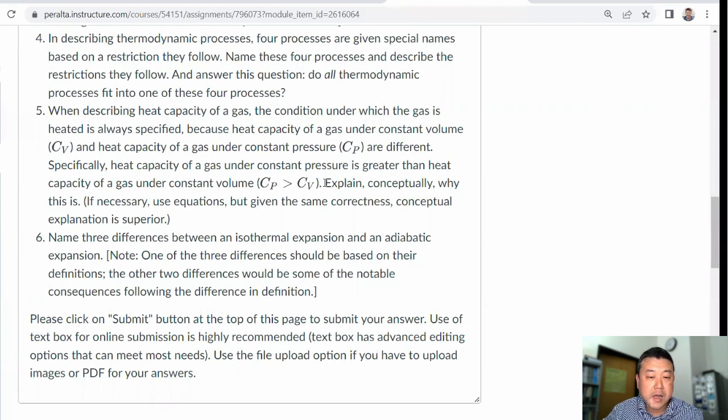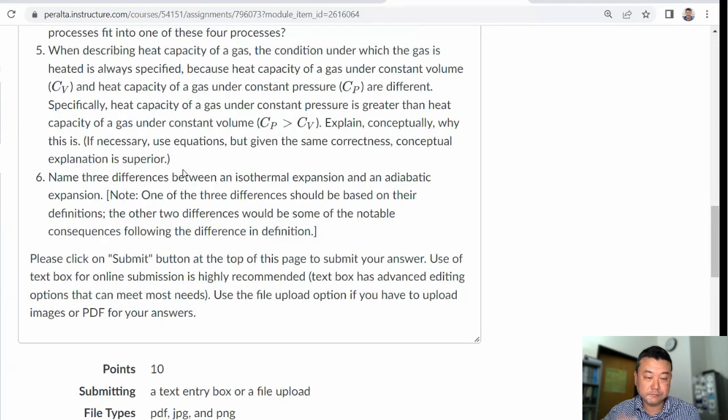I encourage you to read the derivation of these heat capacities in the textbook. If I were to give you a hint, it's work done. That's the one difference between constant volume process, where no work is done, and constant pressure process, where some work is done. I'll expand on that for a full answer.